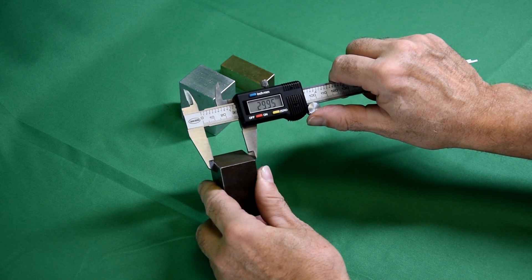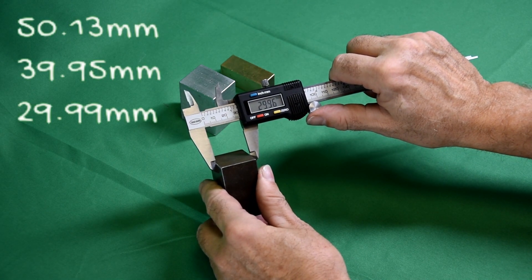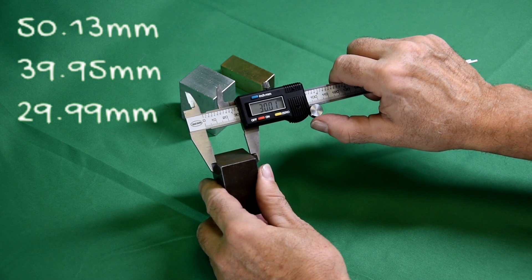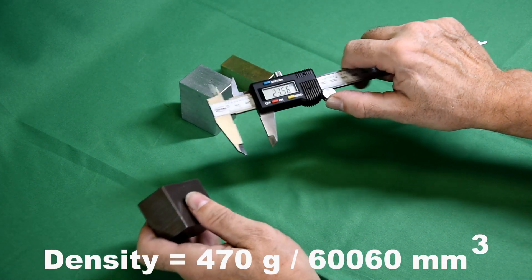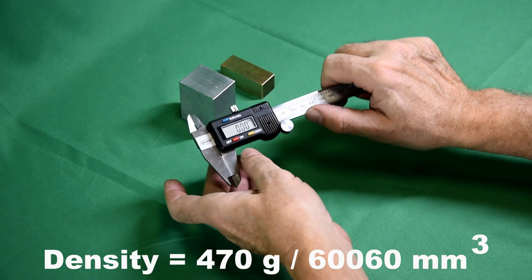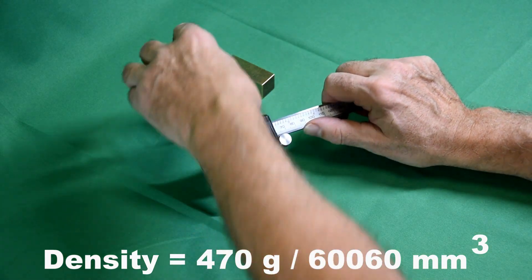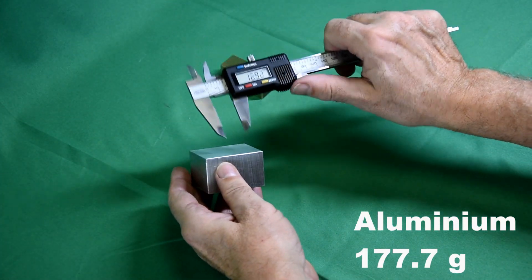These are the dimensions for the steel block. The units used for density are kilograms per meter cubed, and the conversion from grams and millimeters is explained in the core practical video.